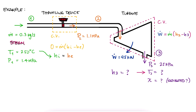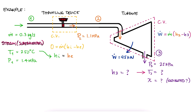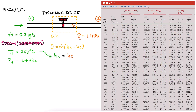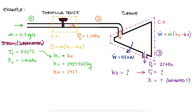Let's start with the throttling device. Quickly checking the saturated mixture tables, for a pressure of 1.4 MPa the saturation temperature is 195.04°C. Since the temperature at state 1 is higher than this, the water is at a superheated vapor phase. For a temperature of 250°C, the saturation pressure is 3976.2 kPa; since the pressure at state 1 is much lower than that, the water entering the throttling device is confirmed to be superheated vapor. Going to the superheated vapor tables for 1.4 MPa and 250°C, the specific enthalpy is 2927.9 kJ/kg. Since H2 equals H1, H2 is equal to this value as well.